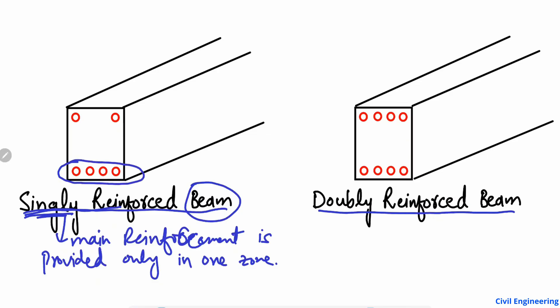We can see that the main four bars are provided in the tension zone. For example, if there is any load acting on the beam, we have bending — the top face is in compression and the bottom face is in tension. We know that concrete is weak in tension, so we provide reinforcement bars in the bottom zone. These four bars are provided in the tension zone in order to increase the tensile capacity of the beam section, and they are known as tensile reinforcement.